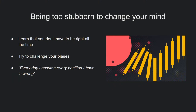The fourth mistake is being too stubborn to change your mind. An important concept in trading is that you don't have to be right all the time — in fact, you're guaranteed to be wrong at least some of the time. Even the best traders aren't right all the time; they may actually be wrong more than they're right and still be profitable because of their overall strategy. Markets are constantly changing and your job is to observe those changes and adapt. Here's a quote from Paul Tudor Jones: 'Every day I assume every position I have is wrong.' This means he's constantly looking for valid ways to contradict his opinions and biases, which is very useful in trading.